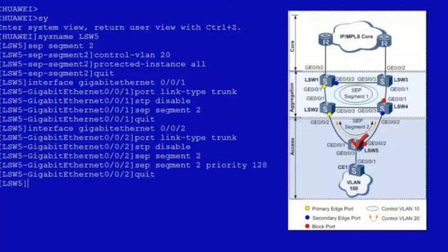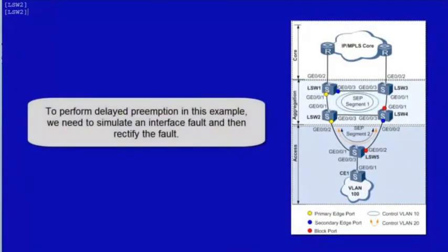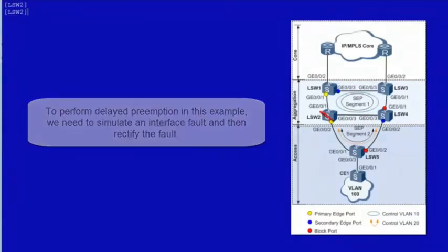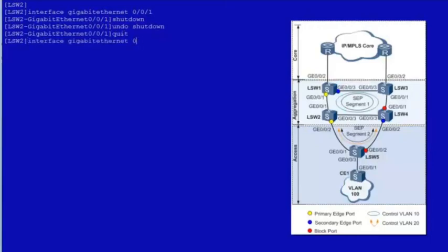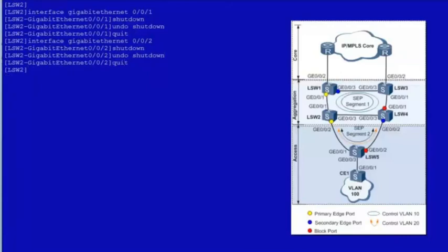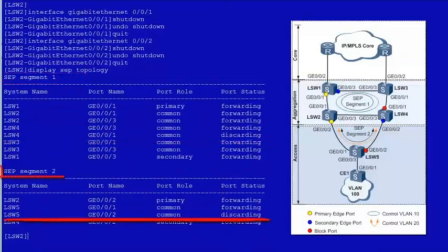That's all for the SEP configuration on the entire network. Let's check the configuration results. To perform delayed preemption in this example, we need to simulate an interface fault and then rectify the fault. On LSW2, enter the view of GE001 and run the shutdown command to simulate an interface fault, then run the undo shutdown command to rectify the fault. Enter the view of GE002 and run the shutdown command to simulate an interface fault, then run the undo shutdown command to rectify the fault. Wait for 30 seconds and run the display SEP topology command. GE001 is blocked on LSW4 in SEP segment 1 and GE002 is blocked on LSW5 in SEP segment 2.